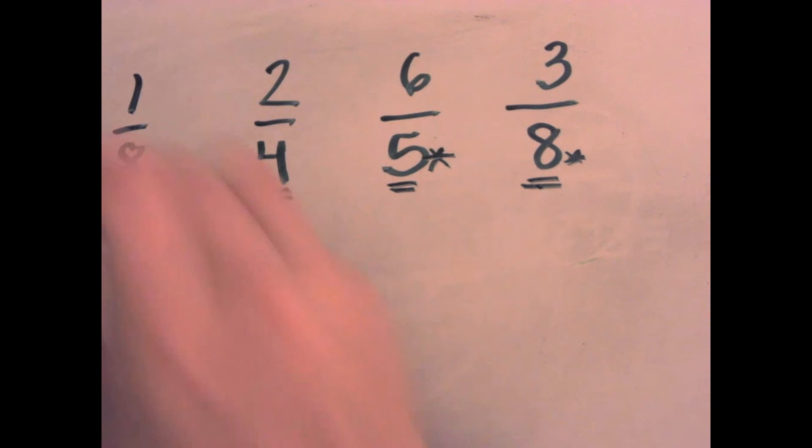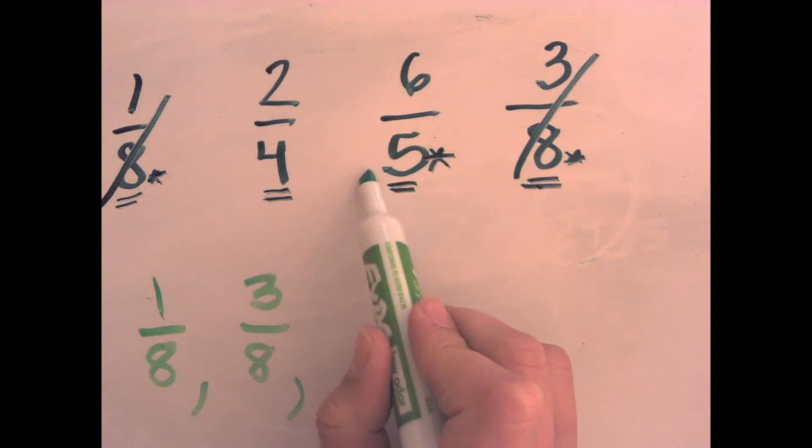And I'm going to go ahead and I'm going to cross these off when I'm done with them so that I know. Next, I have two-fourths or six-fifths. Well, six-fifths is more than a whole, which I know means that it's bigger because it's more than a whole. Two-fourths is a half. So that puts two-fourths here and six-fifths here. This is how you order fractions.